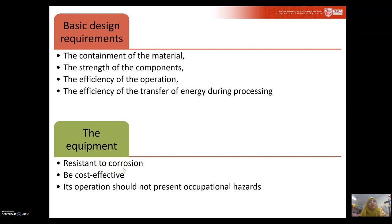Will it be cost effective? And will the operations of the equipment cause any hazard to the worker? These are among the basic requirements and criteria of equipment commonly looked at for chemical industry, and also for food industry when you need to design equipment for food processing.